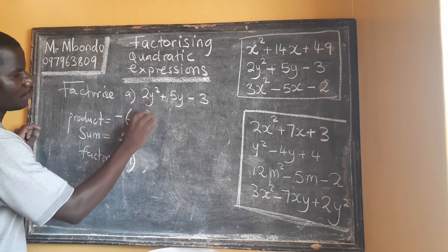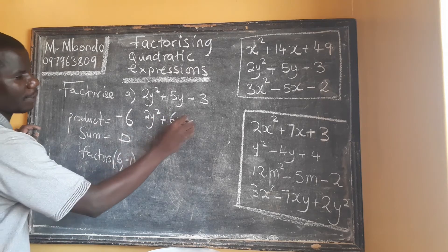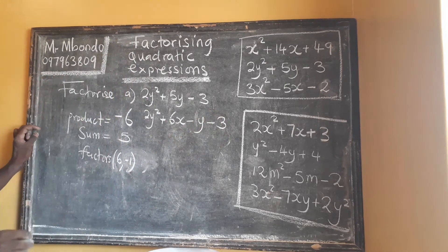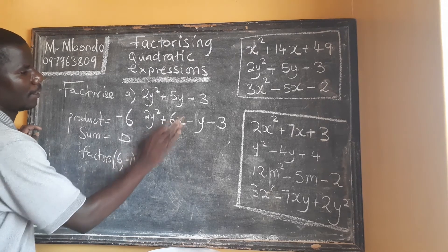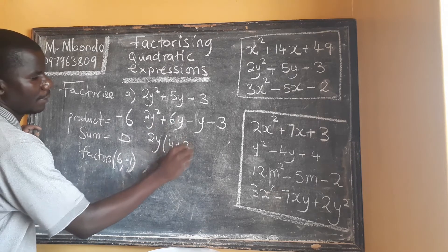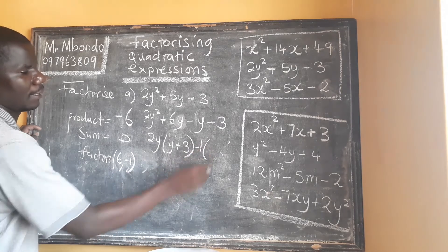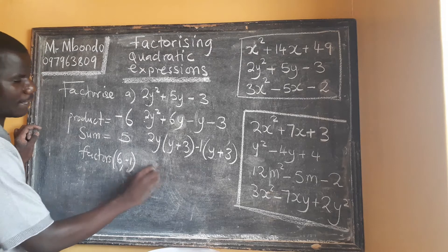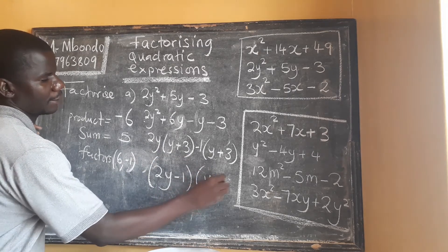We expand the sum using the factors, so we have 2y² + 6y − y − 3. Then we factorize using the grouping method. What is common in the first two terms is 2y, giving us 2y(y + 3). Then we factorize out negative 1 from the last two terms, giving us −1(y − 3). So the final answer is (2y − 1)(y + 3).